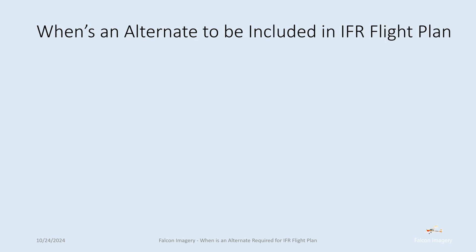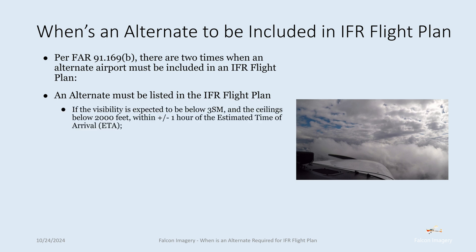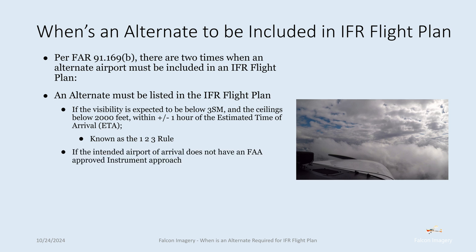So when is that alternate required to be included in the IFR flight plan? There are two times when an alternate airport must be included. An alternate must be listed if the visibility is expected to be below three statute miles and the ceiling is below 2,000 feet within plus or minus one hour of the estimated time of arrival at the intended airport. This is known as the 1-2-3 rule. Secondly, if the intended airport of arrival does not have an FAA-approved instrument approach, we must file an alternate.